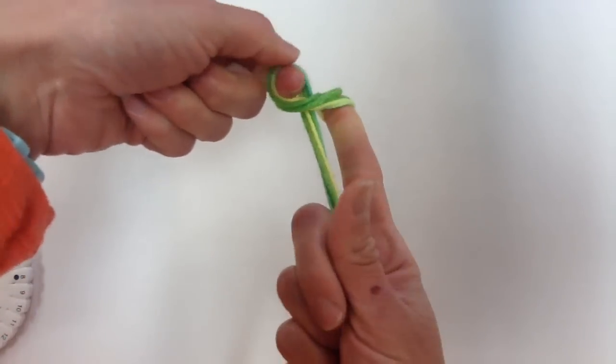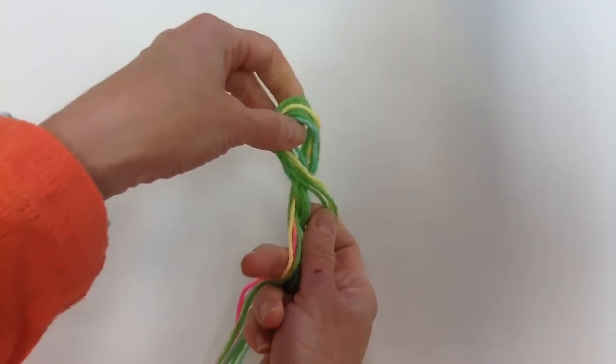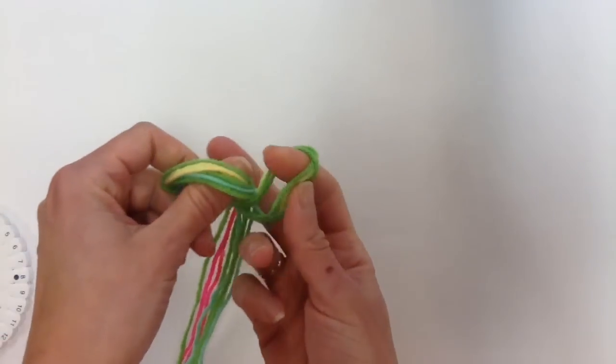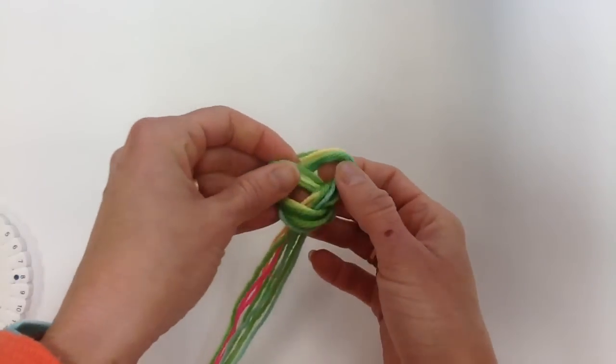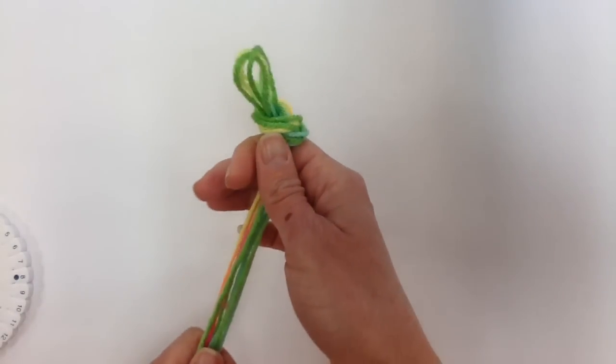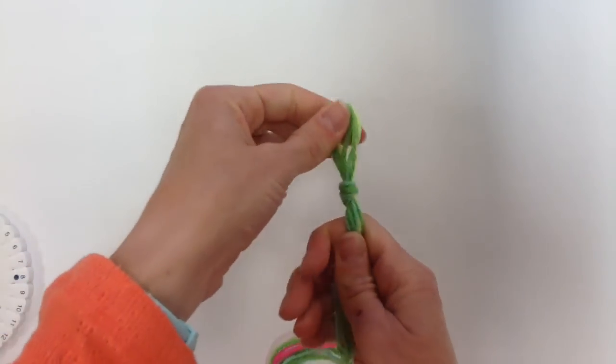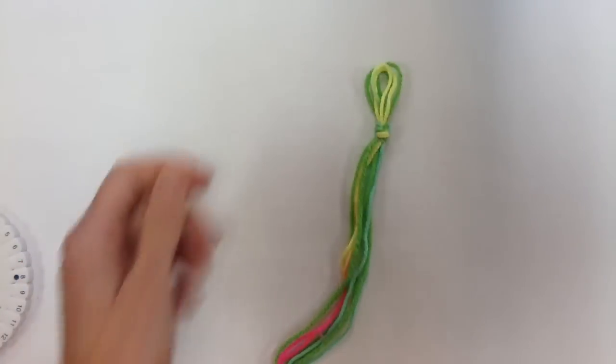Then I'm going to take my four pieces and I'm going to tie them in a knot. I'm making a loop, putting the folds through the loop like that, and then I'm pulling so that I create a knot. So they're connected. That's your next step.